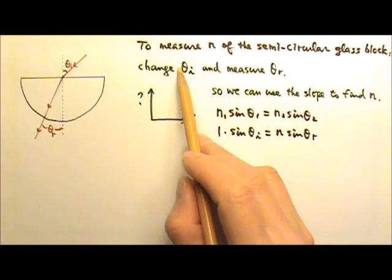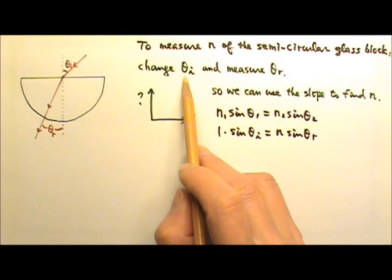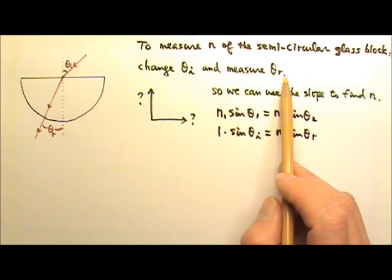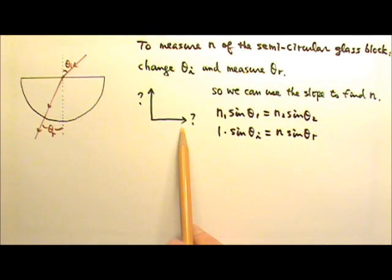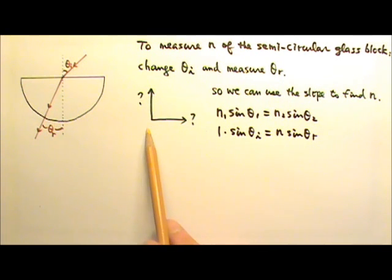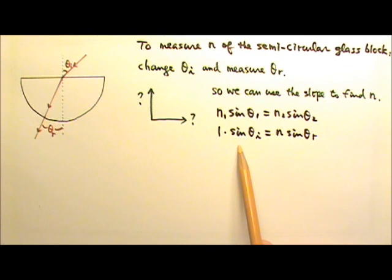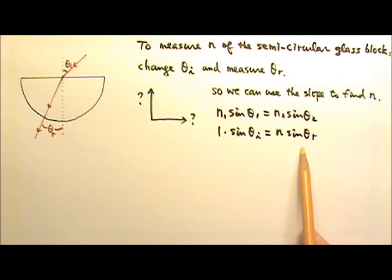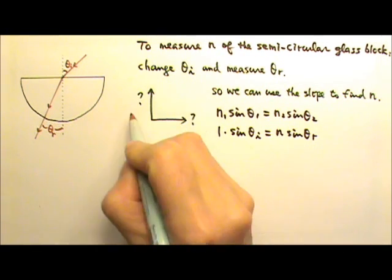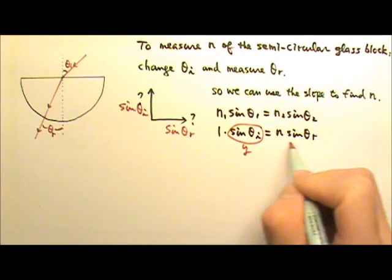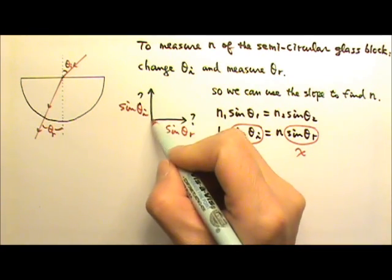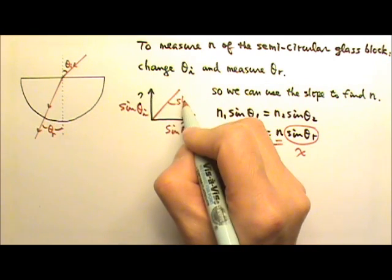Because our independent variable is θ₁ or the angle of incidence θᵢ, and the dependent variable is θ₂ or θᵣ, the angle of refraction, the two axes should be some form of θᵢ and some form of θᵣ. In order to obtain a linear equation, in this case we have to use sin θᵢ for one axis and sin θᵣ for another axis. So if we use sin θᵢ for the y-axis and use sin θᵣ for the x-axis, then our graph should have a slope that is the n.